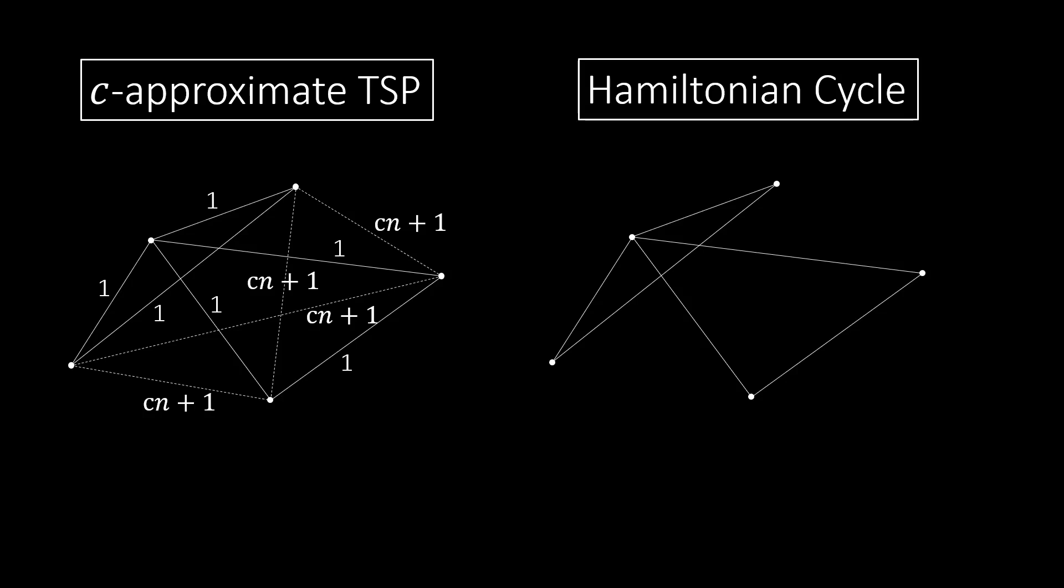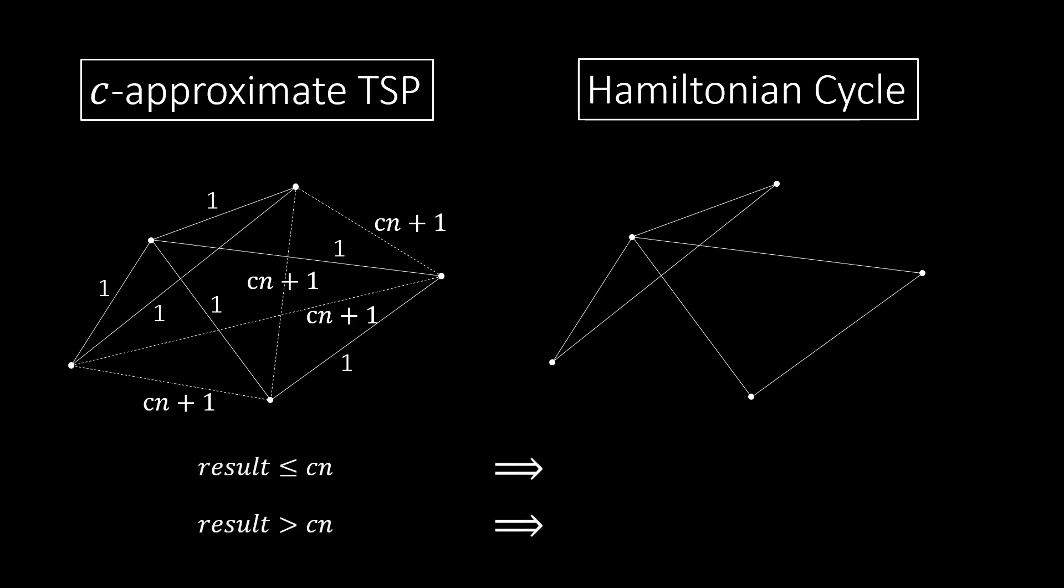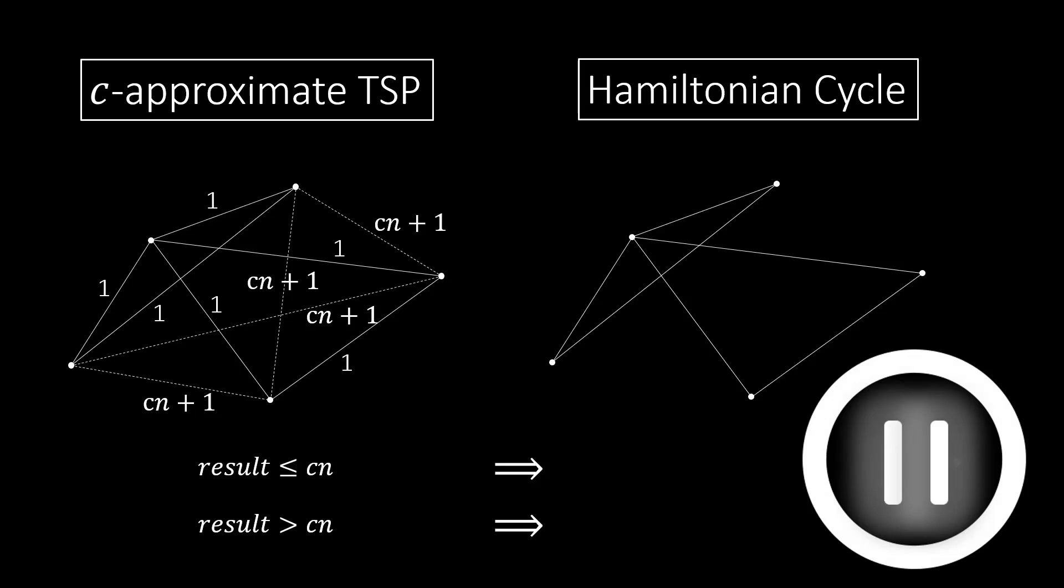Here n denotes the number of nodes in the graph, and C is our desired approximation quality. Now we apply the TSP approximation on the new graph and check if the result is longer than C times n. Pause the video to think about what this tells us about the original graph. Does a Hamiltonian cycle exist there?